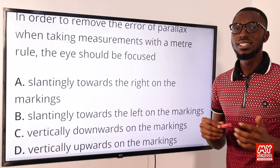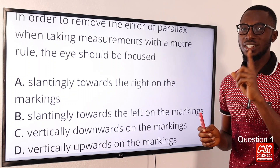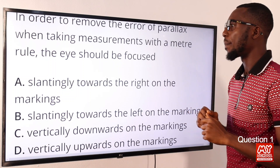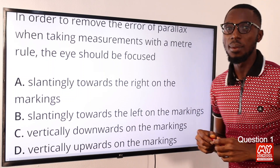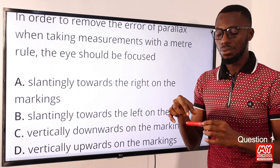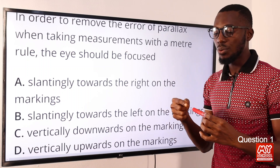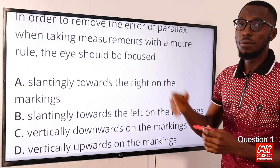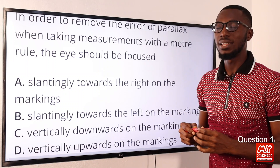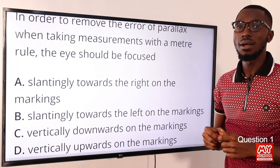Welcome back to my school YouTube channel. In this video segment you'll be joining me to solve questions 1 to 14. Let's start with question one. In order to remove the error of parallax when taking measurements with a meter rule, the eye should be focused vertically downwards on the markings on the meter rule. If you look into the meter rule from the side or slantingly, you are going to produce this error due to parallax. So the correct option is option C.